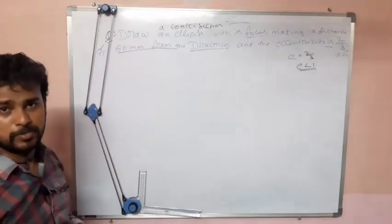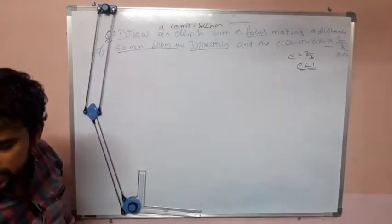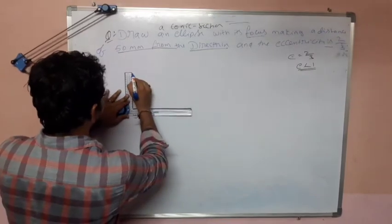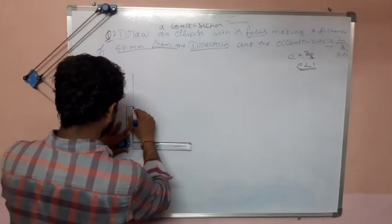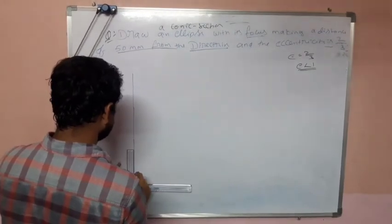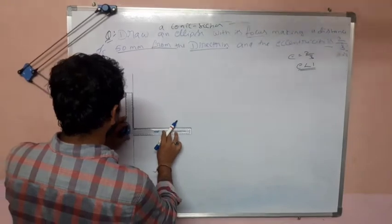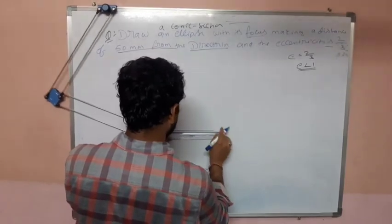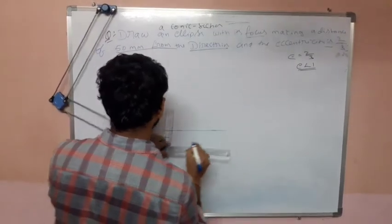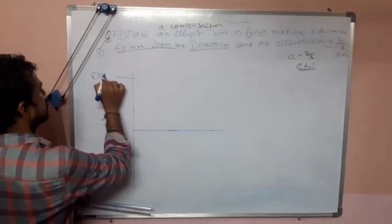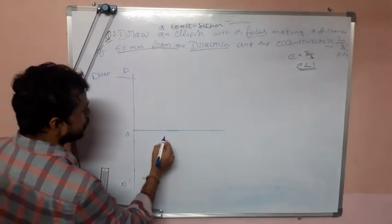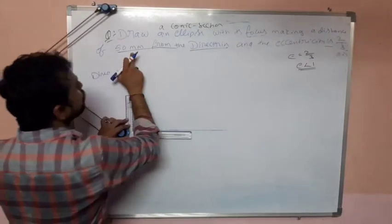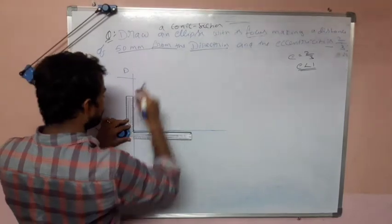Now let's draw the ellipse. For this method, we need the directrix and axis, because this method is common for all three conic sections. First, draw the directrix D-D' and the axis. This is the directrix D-D'. This is center point O and focus F. The focus is making a distance of 50 mm from the directrix.